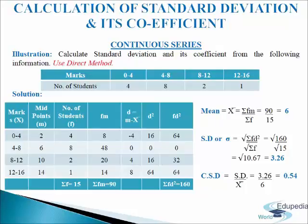Now come to the fifth column, that is d equals to m minus mean, where m is midpoint. So 2 minus 6 gives minus 4, 6 minus 6 gives 0, 10 minus 6 gives 4, 14 minus 6 gives 8. In the sixth column we will write d squared: minus 4 squared is 16, 0 squared is 0, 4 squared is 16, 8 squared is 64.